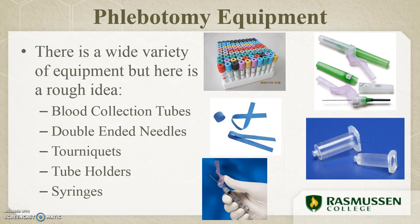Moving on, let's talk about phlebotomy equipment. There is a wide variety of equipment used for phlebotomy procedures, but some basic things you will need are blood collection tubes, double-sided needles, tourniquets, tube holders, and syringes. Blood collection tubes are also called evacuated blood tubes and are designed to automatically withdraw the exact amount of blood needed for testing. Each tube color is color-coded according to the anticoagulant or additive found within it. These blood collection tubes can be glass or plastic, but most nowadays are plastic as it is safer for both the phlebotomist and the patient.